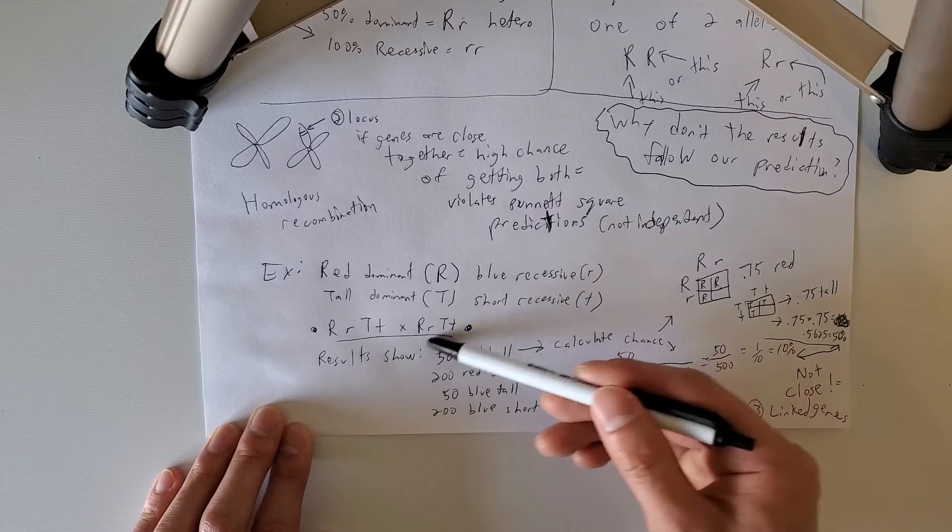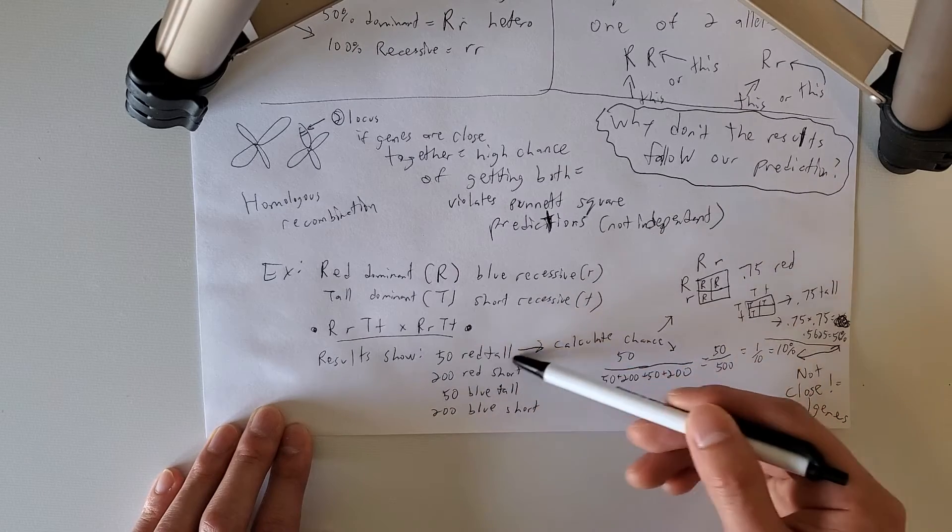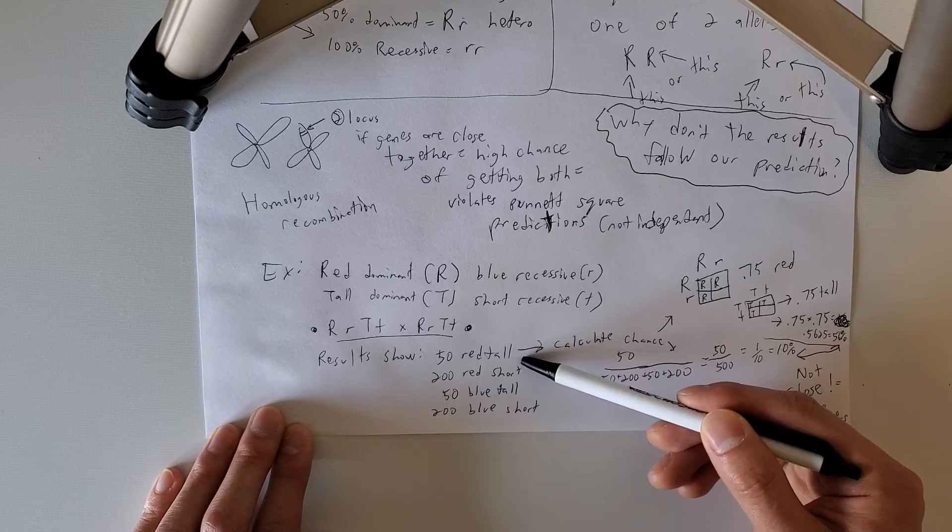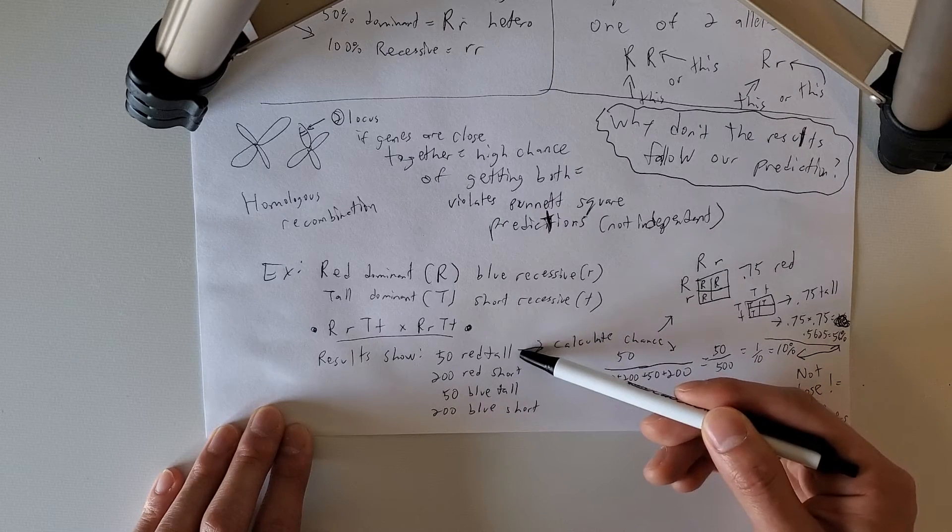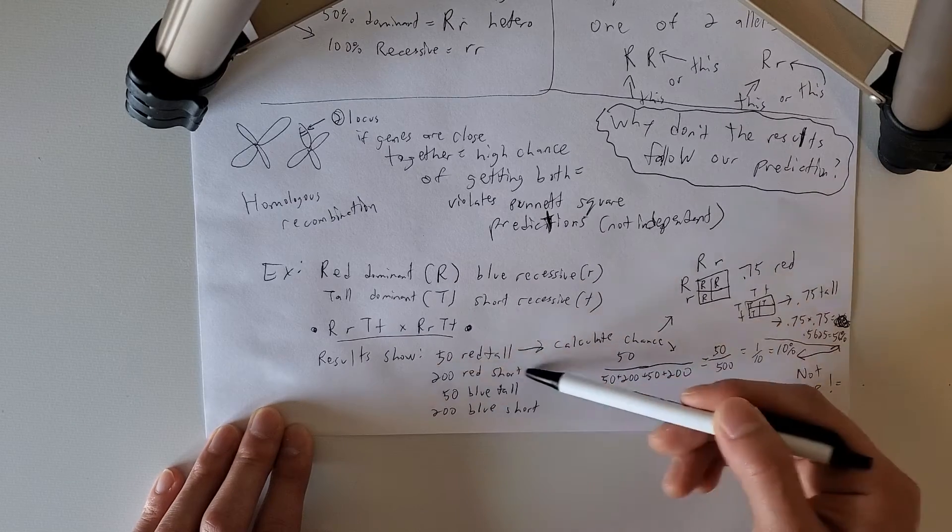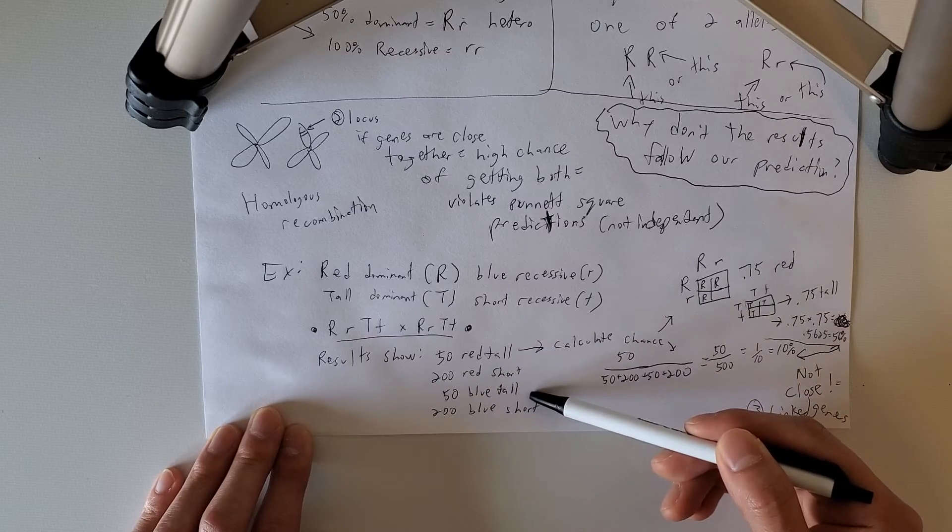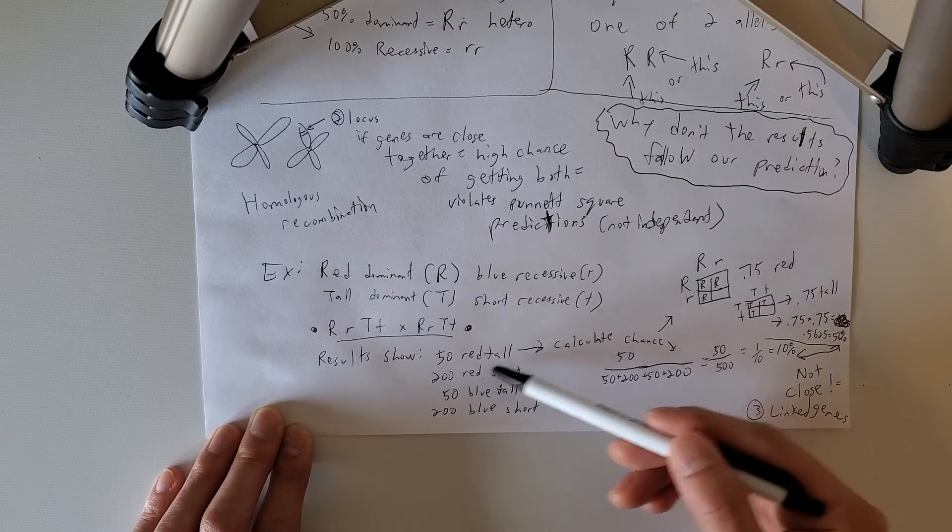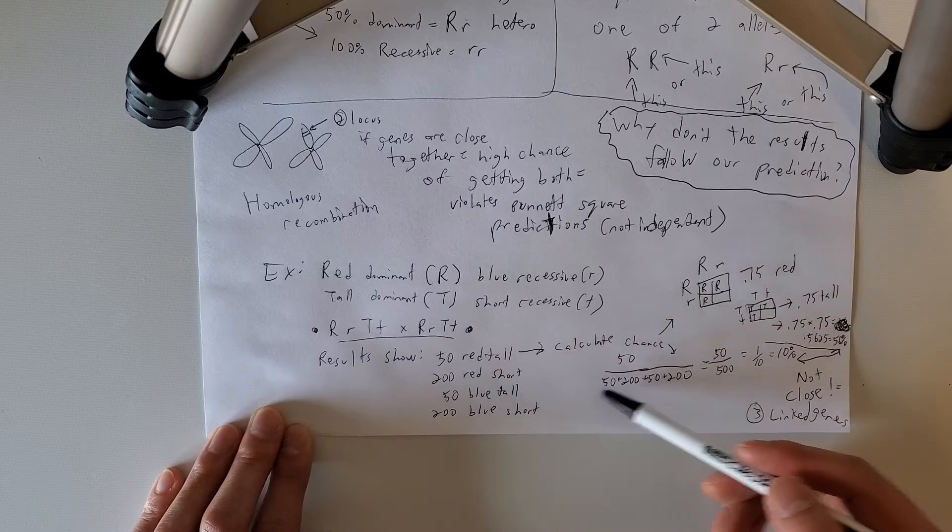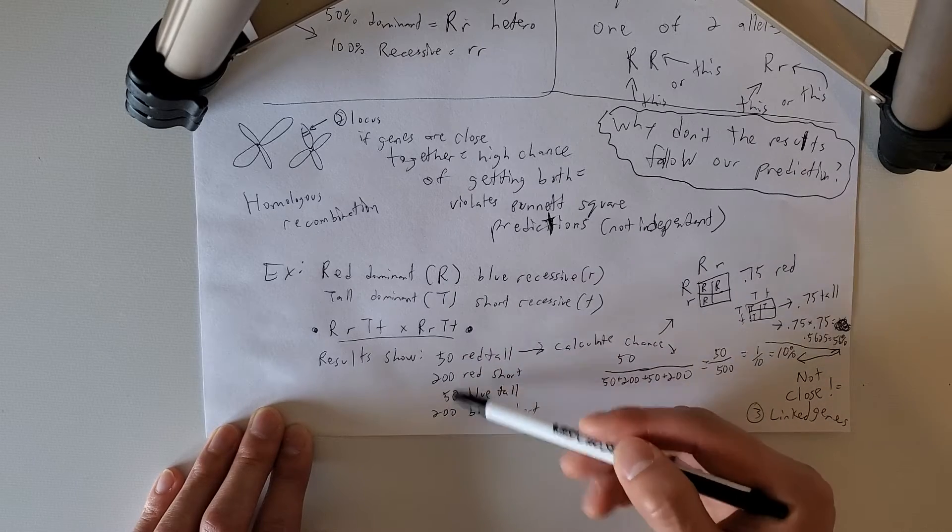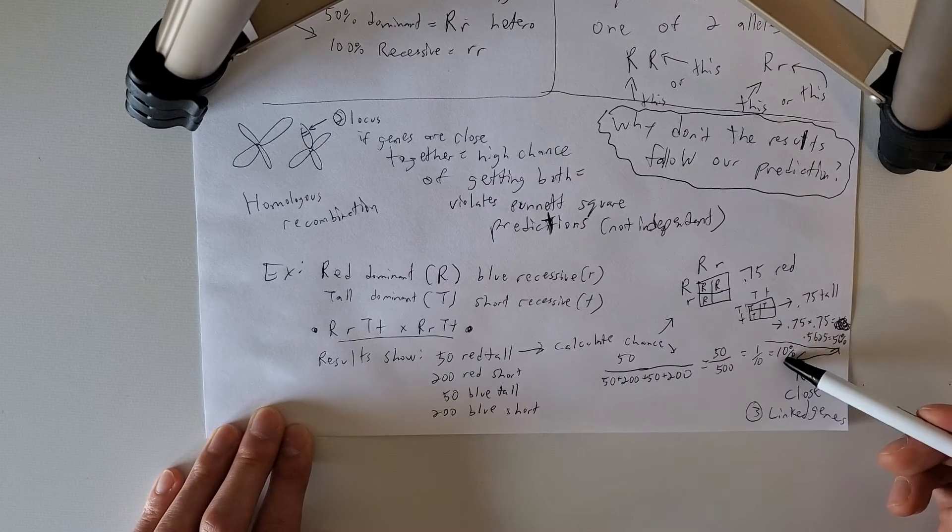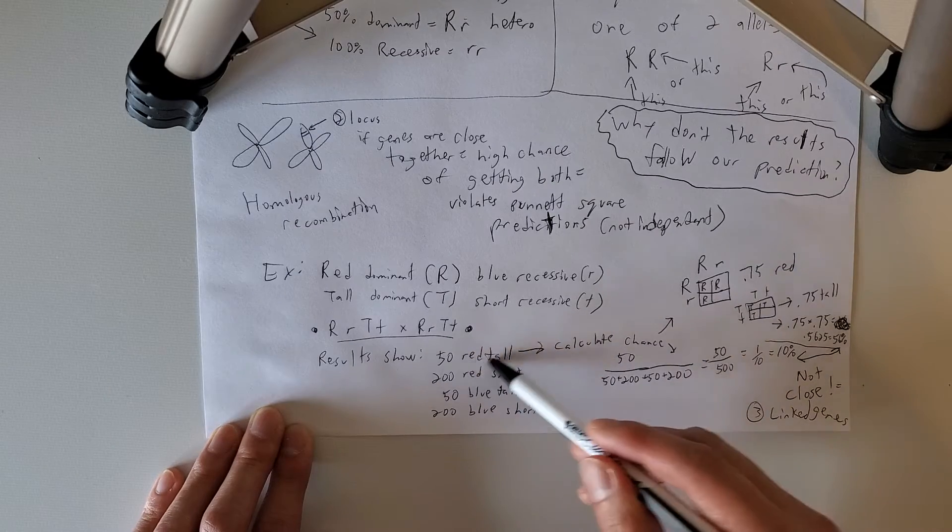So we're going to just take one of the results and we're going to take this result and compare it to our Punnett square prediction. That's how we're going to figure out if it's linked or not. Remember, if it's linked, it's not going to follow our prediction. So I'm just going to do the first one. So 50 red tall, how much percent is that exactly? So I'm going to add it all up, 50 plus 200 plus 50 plus 200, that equals to 500. So 50 divided by 500 is one out of 10, which is 10%. So about 10% of the children were red tall.